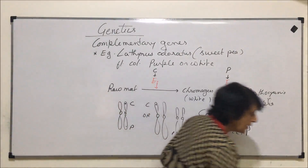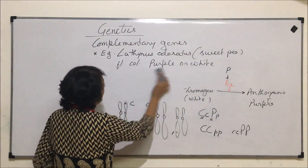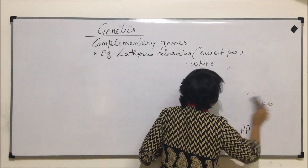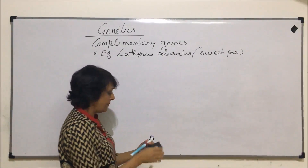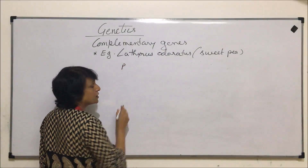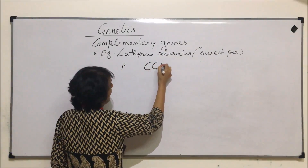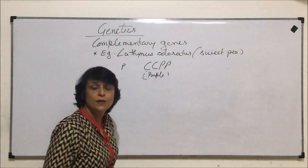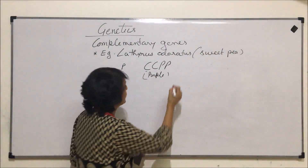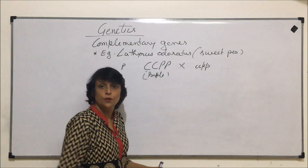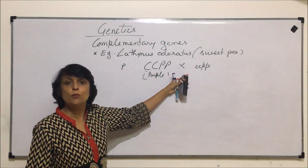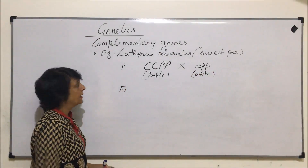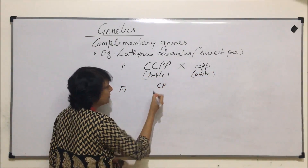Now let us discuss the inheritance and how exactly the ratio works. We start with the typical Mendelian pure line. In the parental generation, we have a purple-flowered plant that is homozygous dominant for both genes — CCPP — crossed with a plant that is recessive for both, ccpp, giving white flowers.